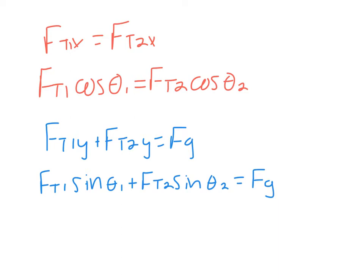Now, the only things I don't know are FT1 and FT2. I've got two equations with two unknowns. I know my theta 1, theta 2, and FG. It doesn't matter what you substitute to solve for, but we're going to isolate one and plug it into the other. I'm just going to isolate FT1. So FT1 from here would equal FT2 cosine theta 2 over cosine theta 1.